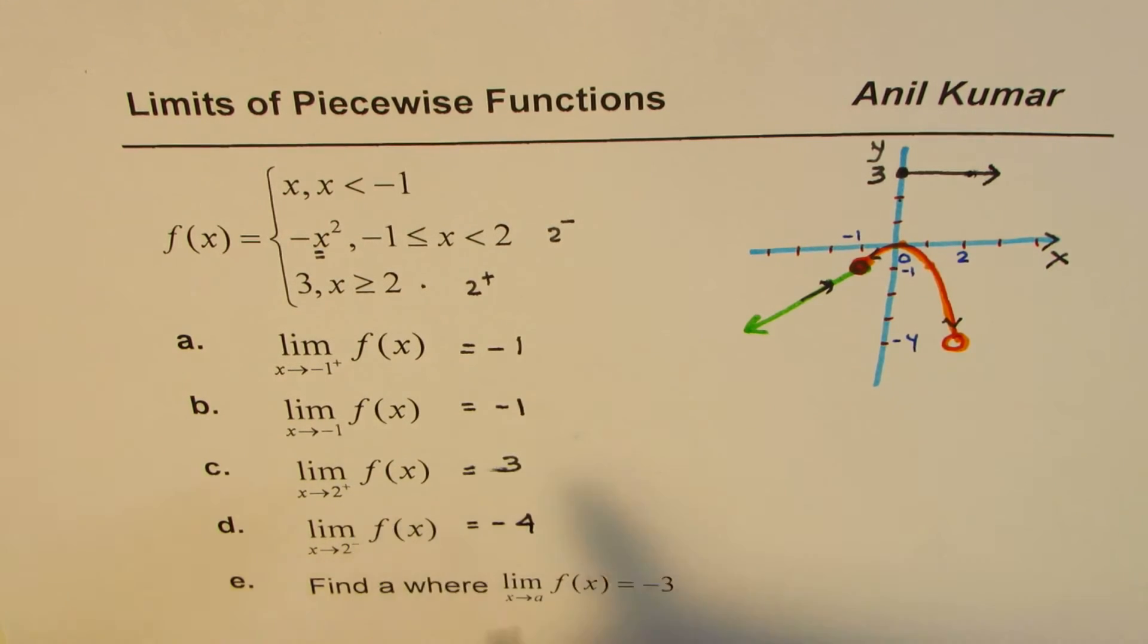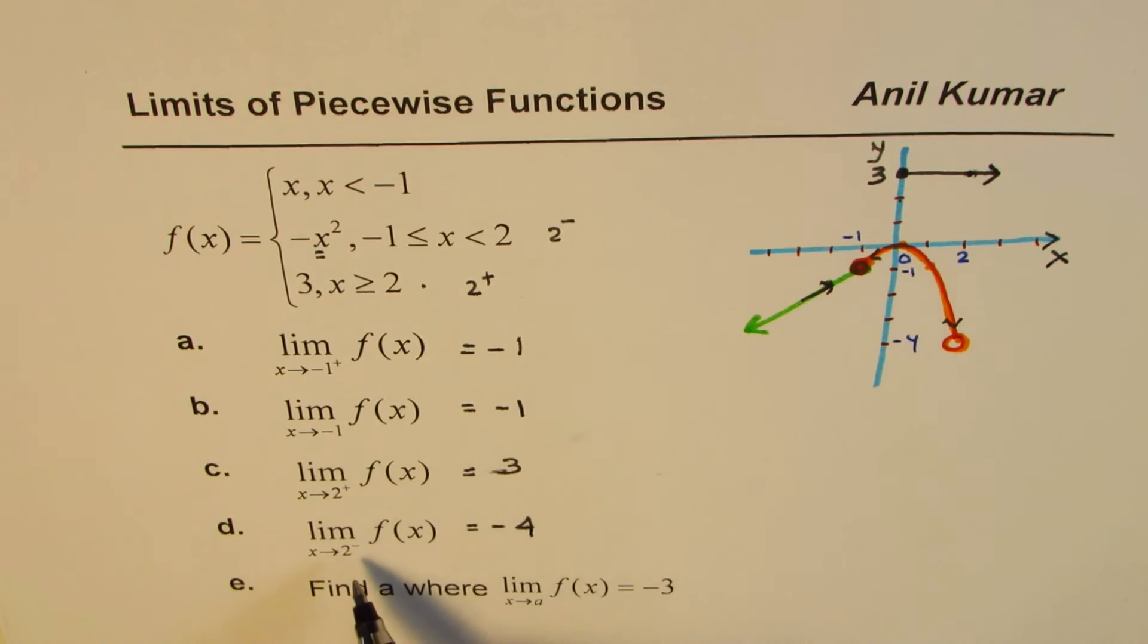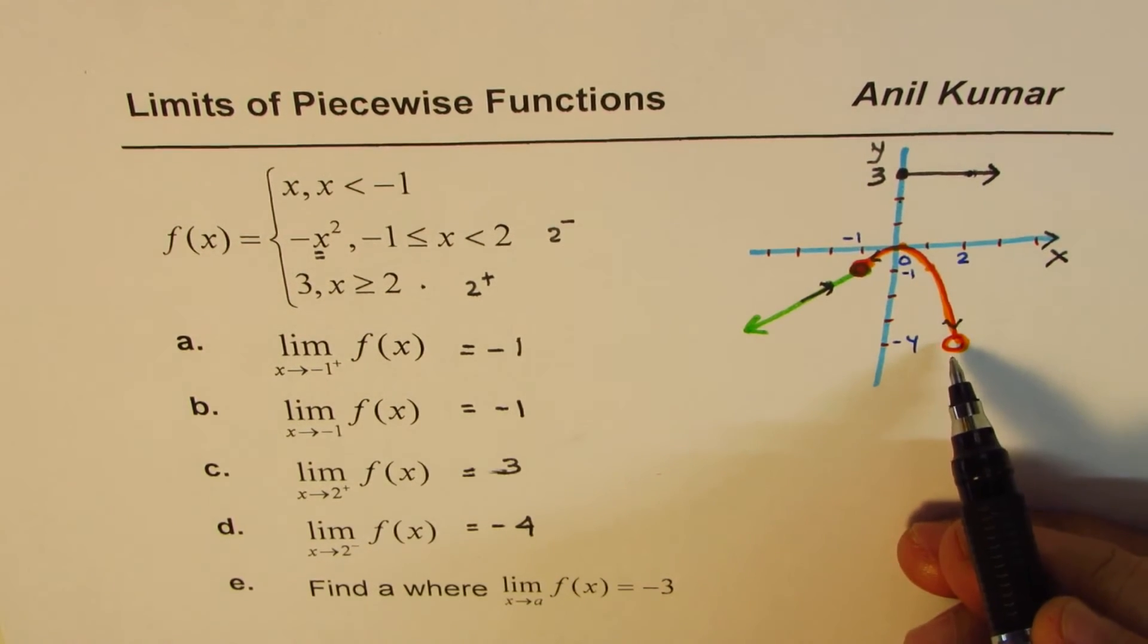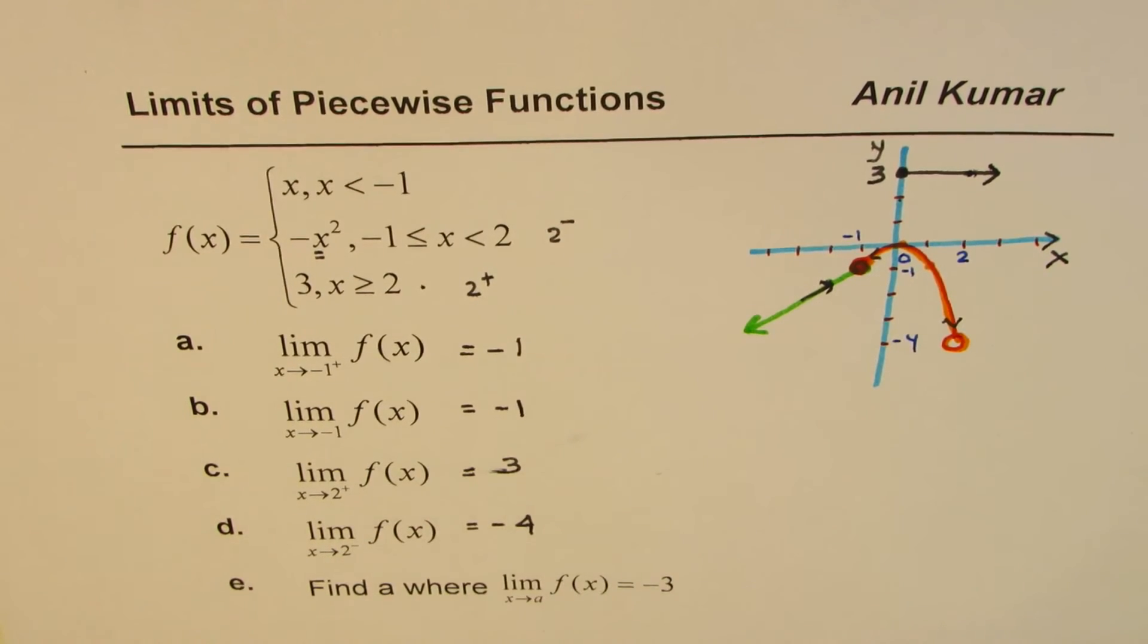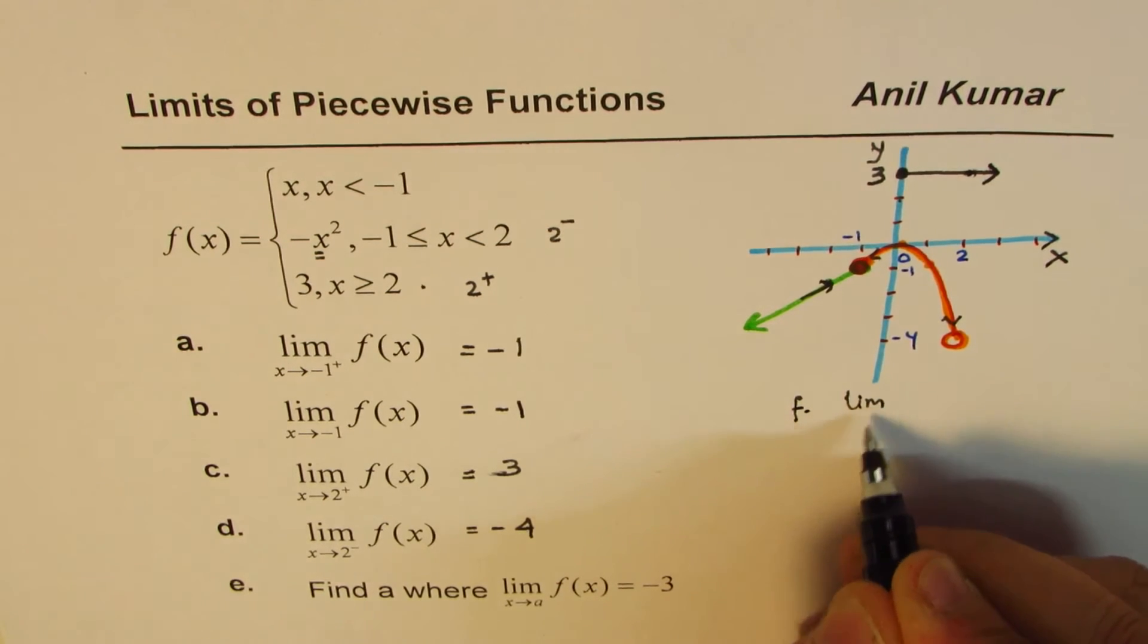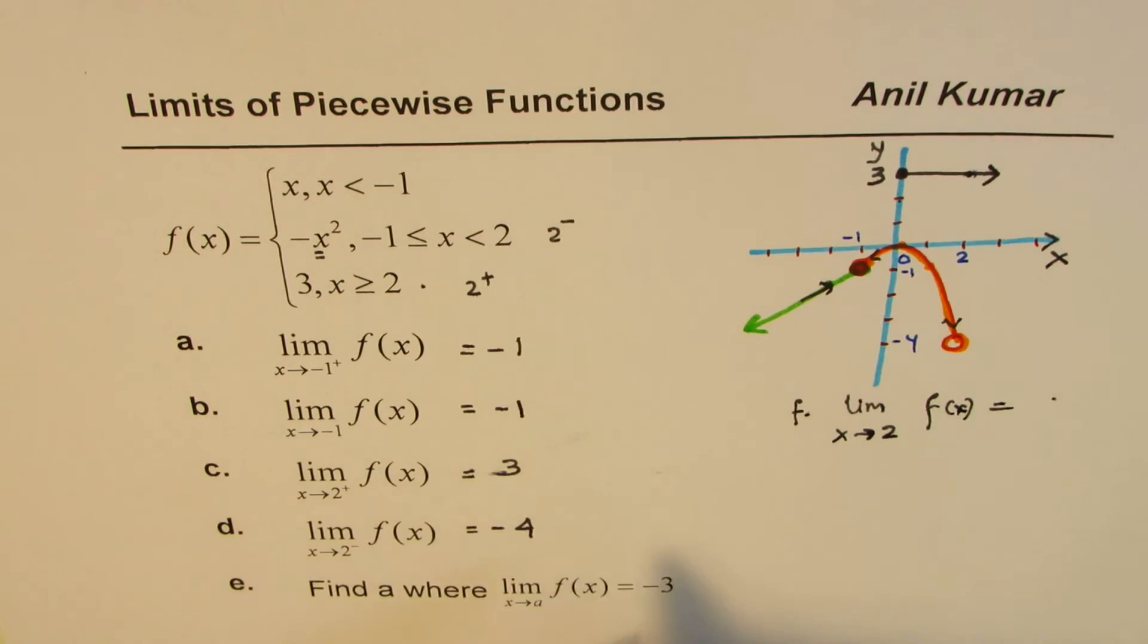So since you are approaching different points at 2, limit does not really exist at 2. We have not asked that question to you, but that may be a question for you. Fine. Find limit when x approaches 2 for f(x), right? Write down this answer.